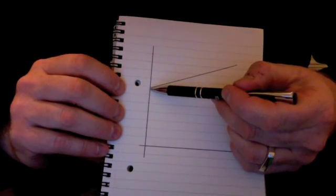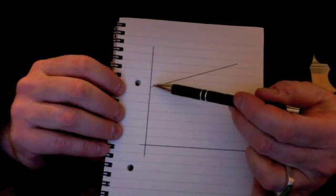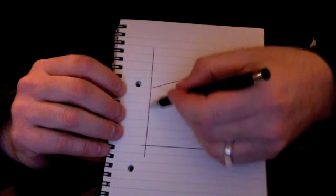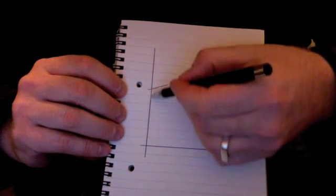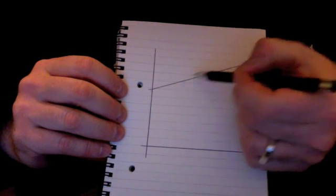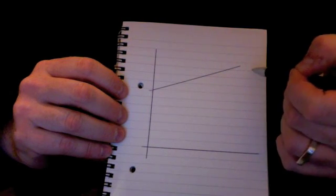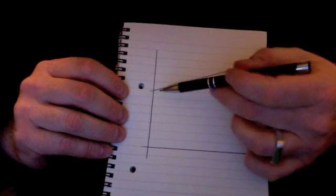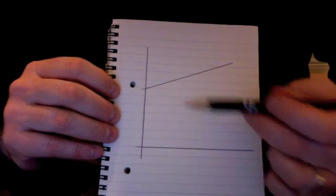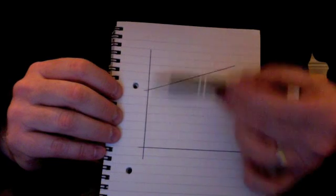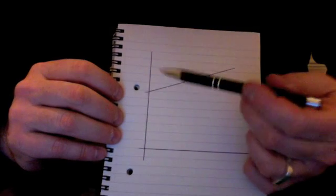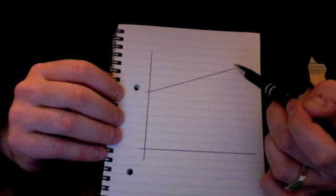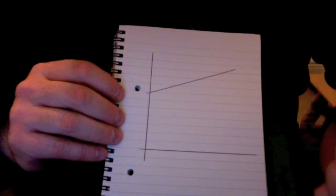One question is: why does the line start partway up the axis? It starts there because if we are measuring the length of the spring, the spring starts off with its own length. This gap represents the length of the spring without any weights, and the increase at each step is due to the adding of the weights. So the key point is that a straight line refers to a direct positive relationship between the two variables — the number of weights and the length in centimeters.